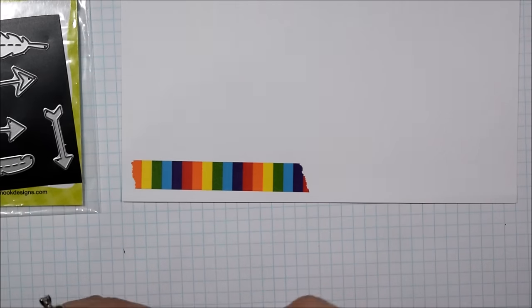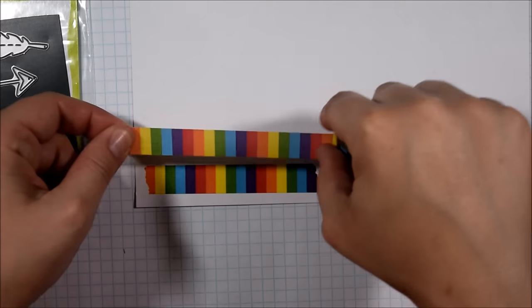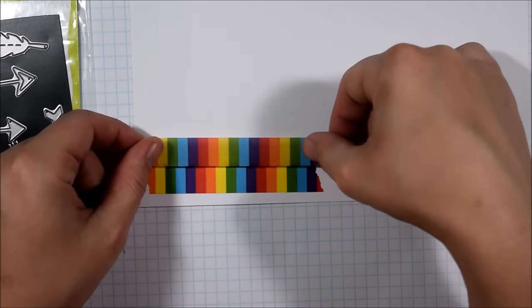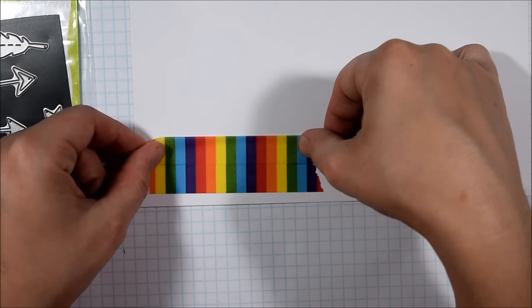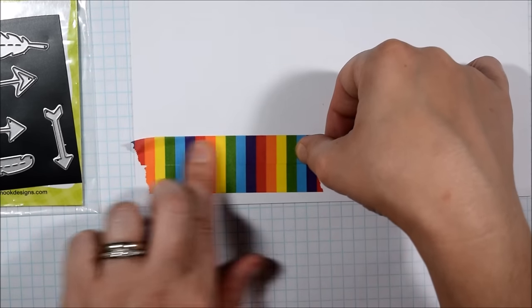To do some die cutting today I wanted to make rainbow paper to die cut, and I had this rainbow washi tape from Little B. I've had it for a while because I love rainbows as many of you know, but I wasn't quite sure how I would use it.